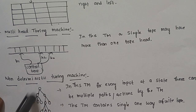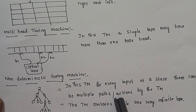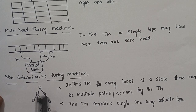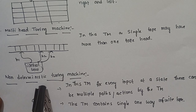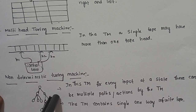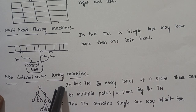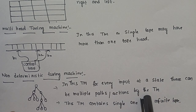The last variant is the Non-Deterministic Turing Machine. More than one path is non-deterministic. In a deterministic machine, for a given input at a state, the next path is a single path. In a non-deterministic machine, there can be two or three next states from a single state. In this Turing Machine, for every input at a state, there can be multiple paths or actions by the Turing Machine — that is non-determinism.